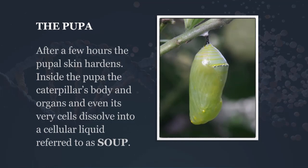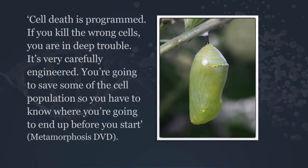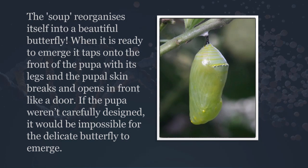After a few hours the pupal skin hardens. Inside the pupa, the caterpillar's body, organs, and even its cells dissolve into a cellular liquid referred to as 'soup.' Cell death is programmed very carefully — if you kill the wrong cells, you're in deep trouble. You have to save some of the cell population, so you have to know where you're going to end up before you start. This is pointing to a designer. The soup reorganizes itself into a beautiful butterfly. When it is ready to emerge, it taps onto the front of the pupa with its legs and the pupal skin breaks and opens like a door. If the pupa weren't carefully designed, it would be impossible for the delicate butterfly to emerge.